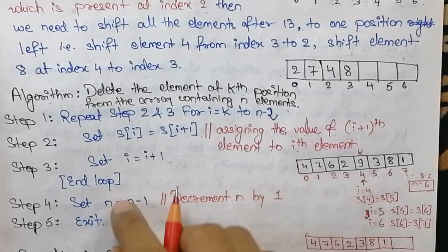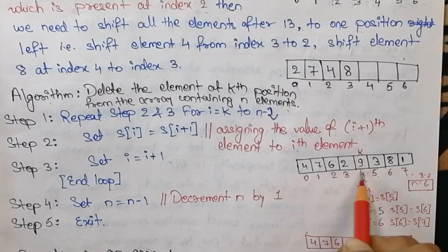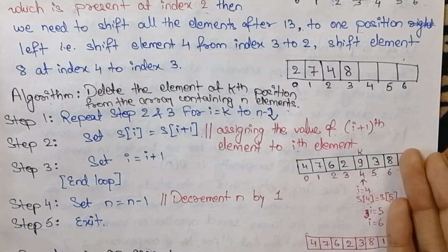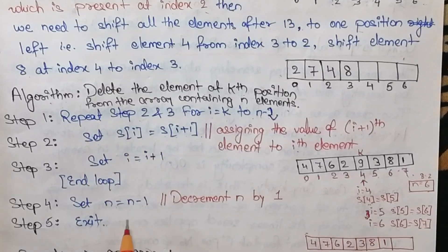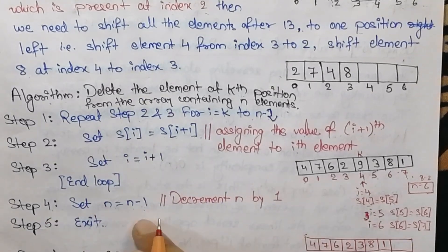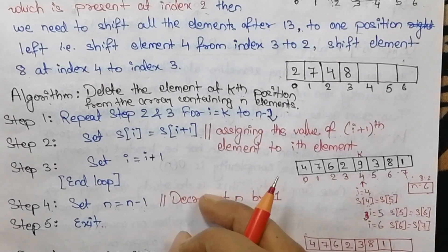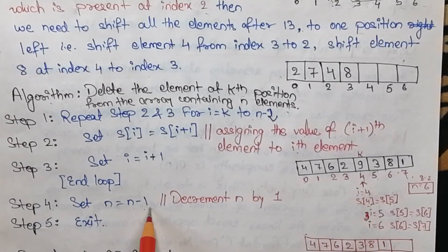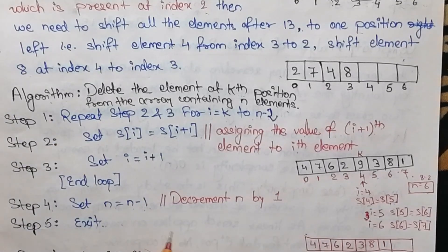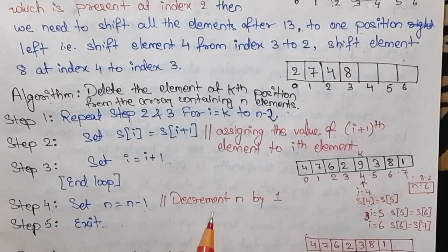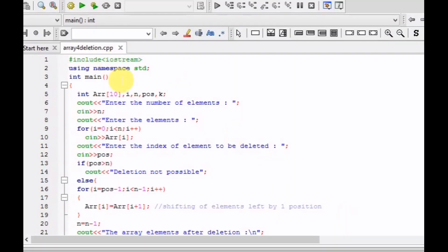We exit the loop when all elements from index k to index n are shifted one position left. Outside the loop, in step 4, since we have deleted an element, the number of elements decreases by 1 — n = n - 1. This is the complete algorithm for the deletion operation of an element from the array.